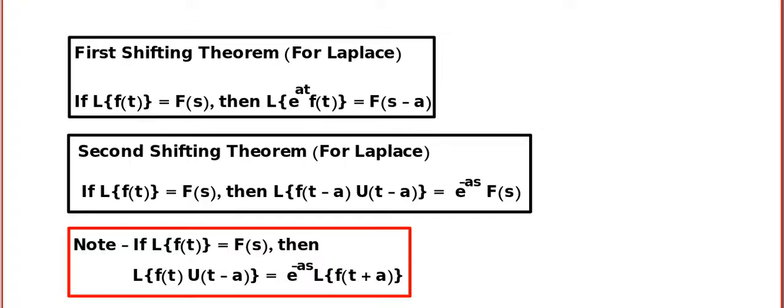You can pause the video for one minute and copy the statement. So, we have the first shifting theorem, which we have already used long back. That is, if you know the Laplace transform of f of t, then you can access the Laplace of e power at multiplied by f of t by shifting. Look at this — the graph f of s and f of s minus a. You know that the graphs are the same, but it is shifted a units towards the right. We learned in the last lesson.